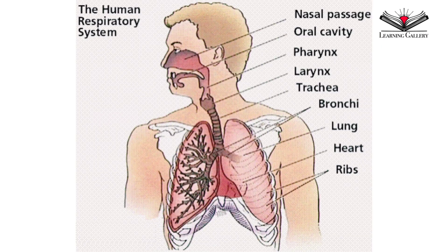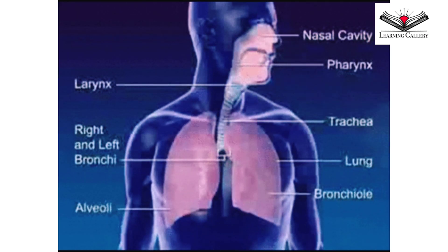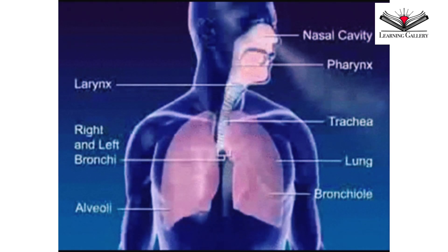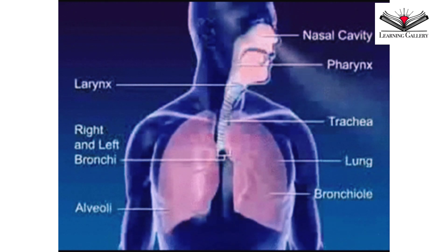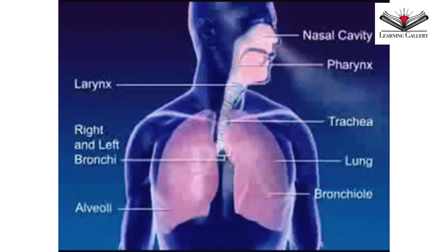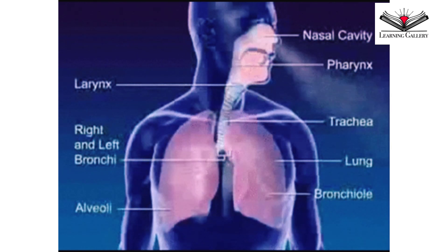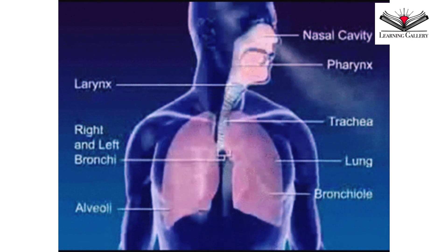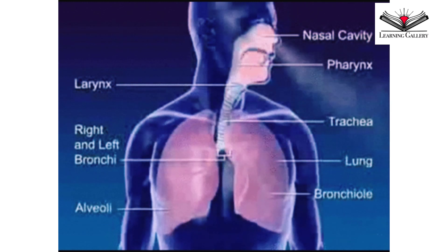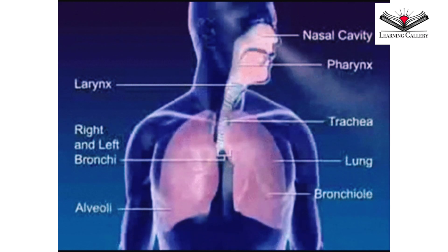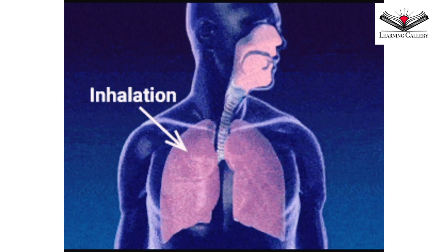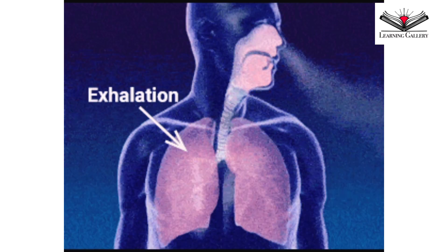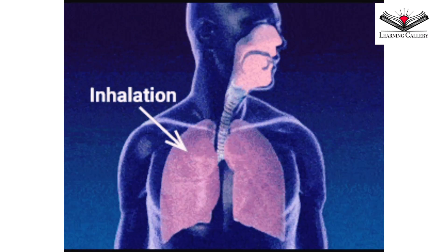The human respiratory system consists of a pair of lungs and a series of air passages leading to the lungs. It consists of the nasal cavity, pharynx, larynx, trachea, bronchi, and bronchioles.